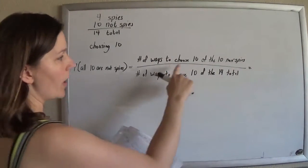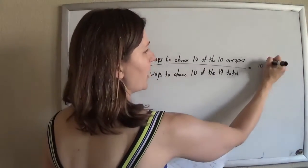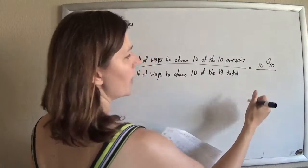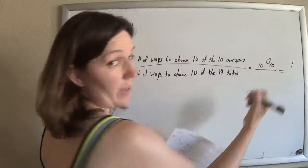So two combo problems. If I have 10 non-spies and I want to choose all 10 of them, that's just one way to do that.